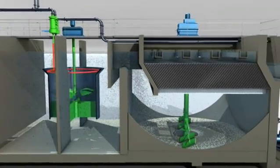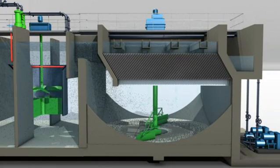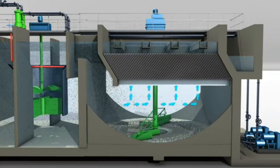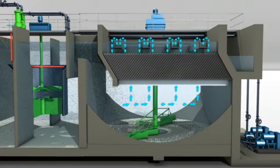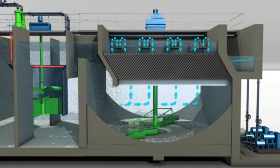There, the microsand ballasted flocks settle quickly to the bottom, whereas clarified water rises through the lamella, pours into a series of collection troughs, and then into the common effluent launder.